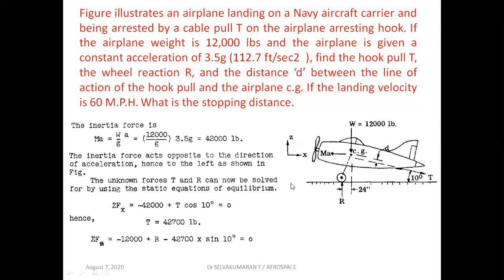The aircraft is landing, meaning it is decelerating, so the inertia force is acting forward. If it were accelerating, the inertia force would act backward toward the right-hand side. The inertia force acts opposite to the direction of acceleration, hence to the left as shown in the figure. The unknown forces are T, the hook pull, and the wheel reaction R, which we find from static equilibrium equations.